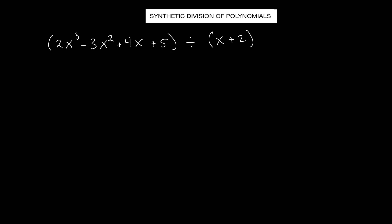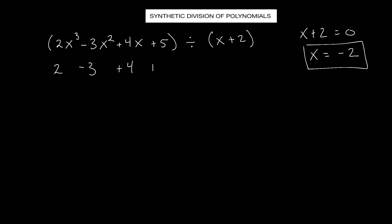Once again, first step: put the divisor equal to 0. So x plus 2 equals 0, meaning x equals negative 2. This is going to be our divisor. We write out the coefficients: 2, negative 3, positive 4, and positive 5. Draw a line underneath and put the divisor here: negative 2. First step, bring down that 2.